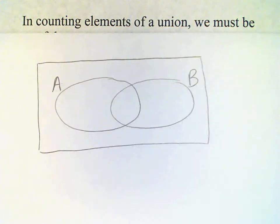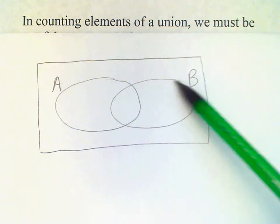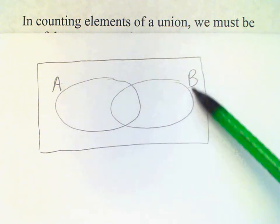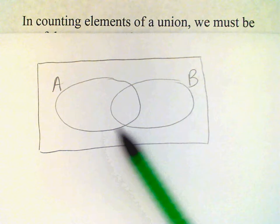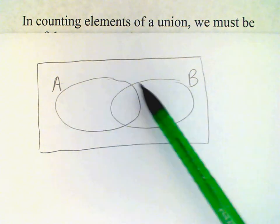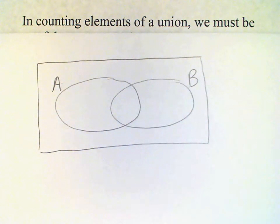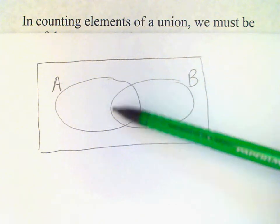You can see that with a Venn diagram. If we have a union of two sets, A and B, then we need to count all of the elements in the region indicated here. But if we count A, we'll be counting this region, and if we count B, we count this region. So if we add the cardinal numbers of A and B, then we'll be adding the intersection twice — we'll be counting that region twice.